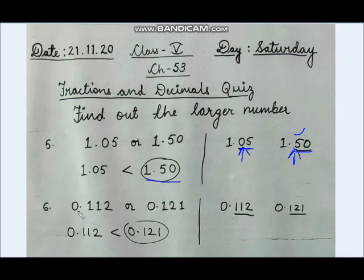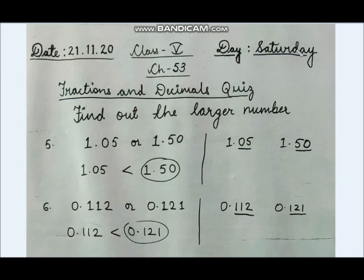In question number 6: 0.112 or 0.121. After the decimal point we have 112 and 121 respectively. Since 121 is greater than 112, 0.121 is the greater decimal number. Similarly, we can solve for fractions and decimal numbers to find which is the larger fraction or decimal.